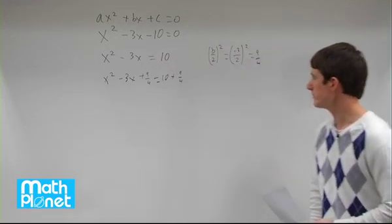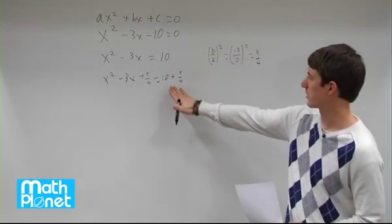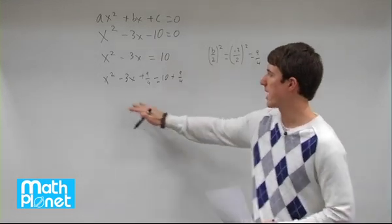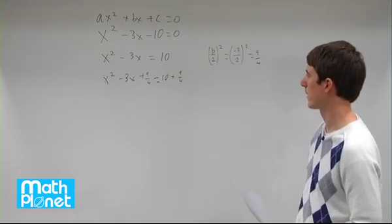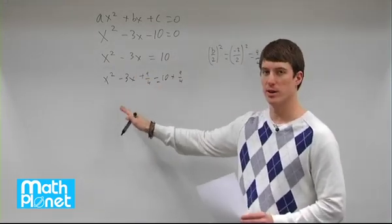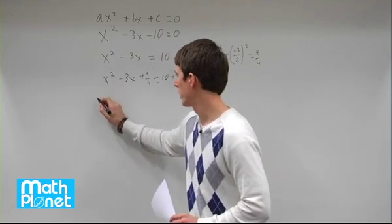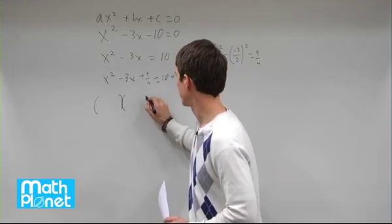The fourth thing we want to do is simultaneously simplify this side by using common denominators and factorize this side. That's going to be called completing the square, that step right there. This looks a little bit ugly, but to complete the square we know that we already have the pieces we need.